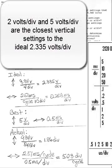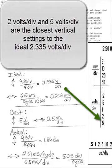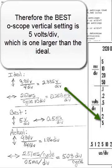2 volts per division and 5 volts per division are the closest vertical settings to the ideal 2.335 volts per division. Therefore, the best oscilloscope vertical setting is 5 volts per division, which is one larger than the ideal.